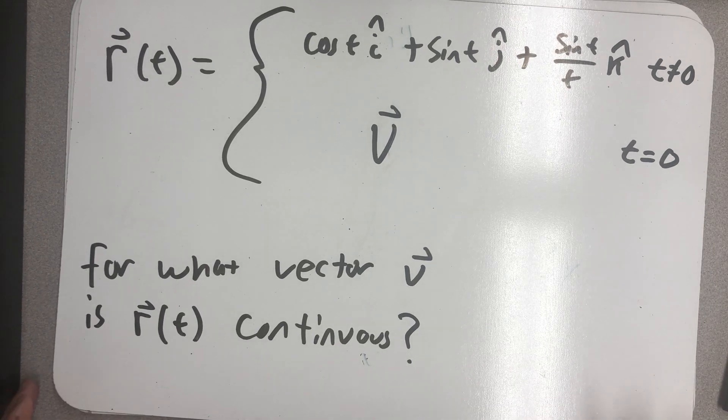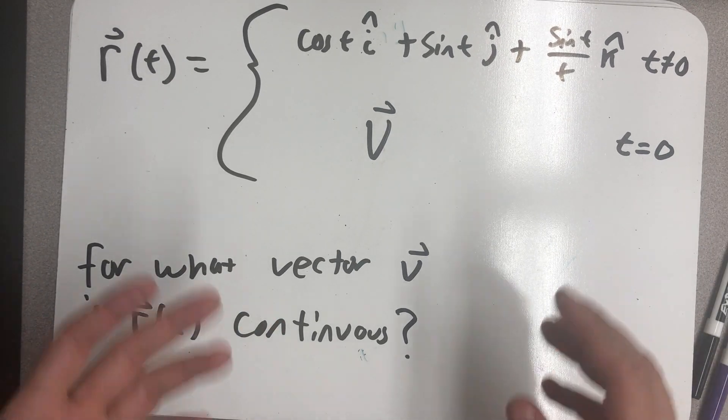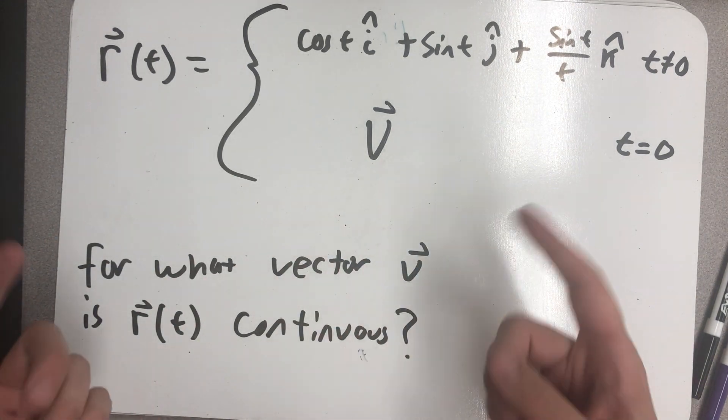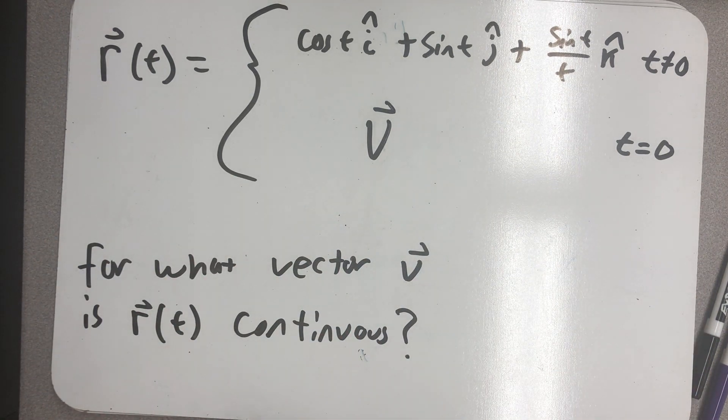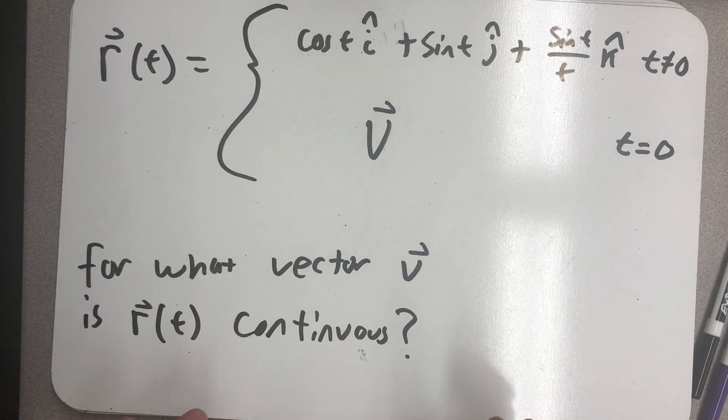One of my favorite kinds of questions from calc 1 kind of looked like this. We were given a piecewise function with an unknown value and then asked, for what value is this function continuous everywhere?